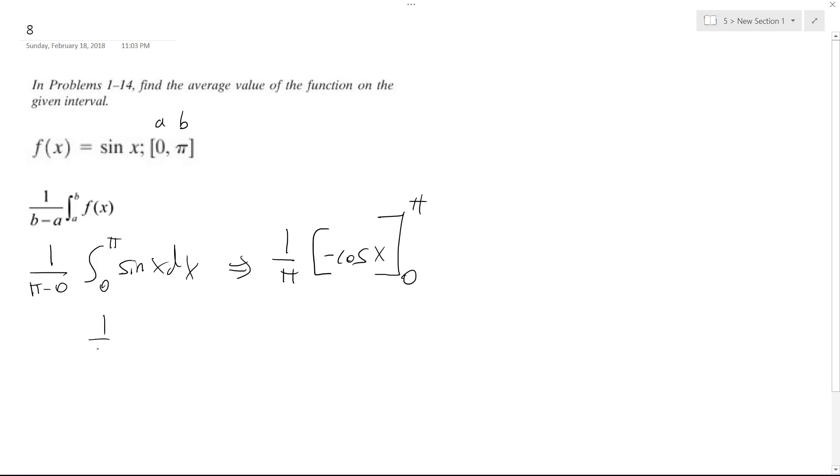So one over pi, so negative cosine of pi, cosine of pi is equal to negative one minus, and the cosine of zero is equal to one.